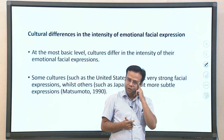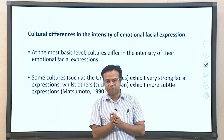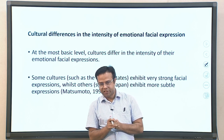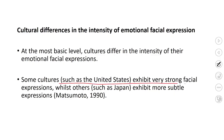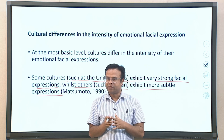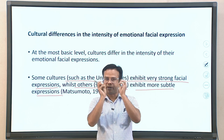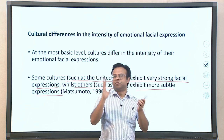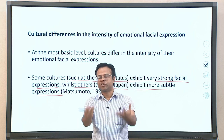Culture can also influence the intensity of emotional facial expression. The same emotion may be expressed with different intensity depending on the culture. At the most basic level, cultures differ in the intensity of their emotional expression. For example, some cultures such as the United States exhibit very strong facial expressions — there is a norm of exhibiting very strong facial expression. While some other cultures such as Japan exhibit more subtle expressions; in Japan expressions of anger or sadness may be very subtle, whereas in countries like the USA they are very strongly expressed.